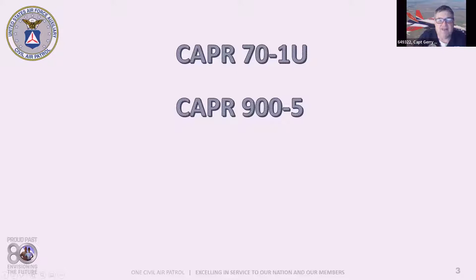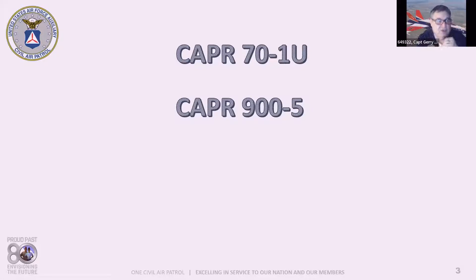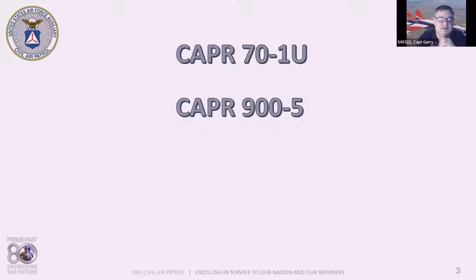CAPR 900-5, the CAP Insurance Benefits Program — we will be discussing much of what CAPR 900-5 covers, but it's expected that you download it to have available. It can always be found at gocivilairpatrol.com. That is national headquarters' main web page, and the information there is invaluable — one of the largest libraries of information I've ever seen. Whether you're in the AE program, the cadet program, or the emergency services program, there's a ton of links and downloads — take advantage of them.